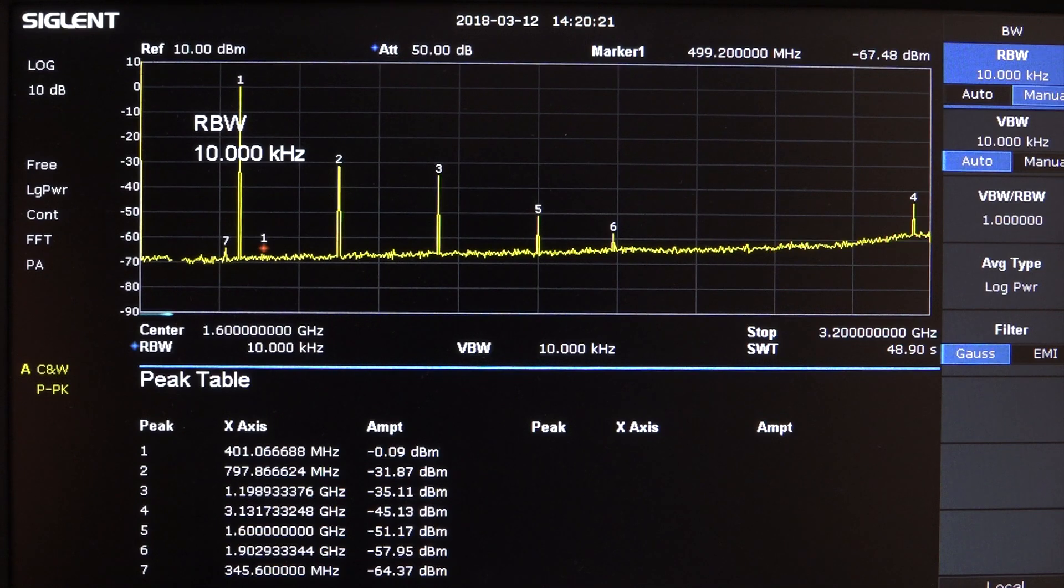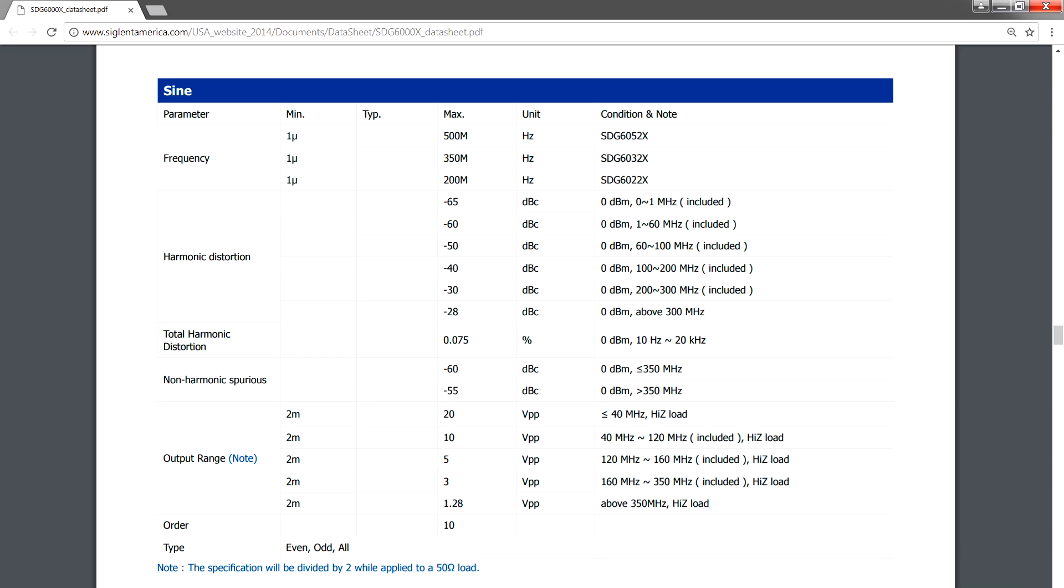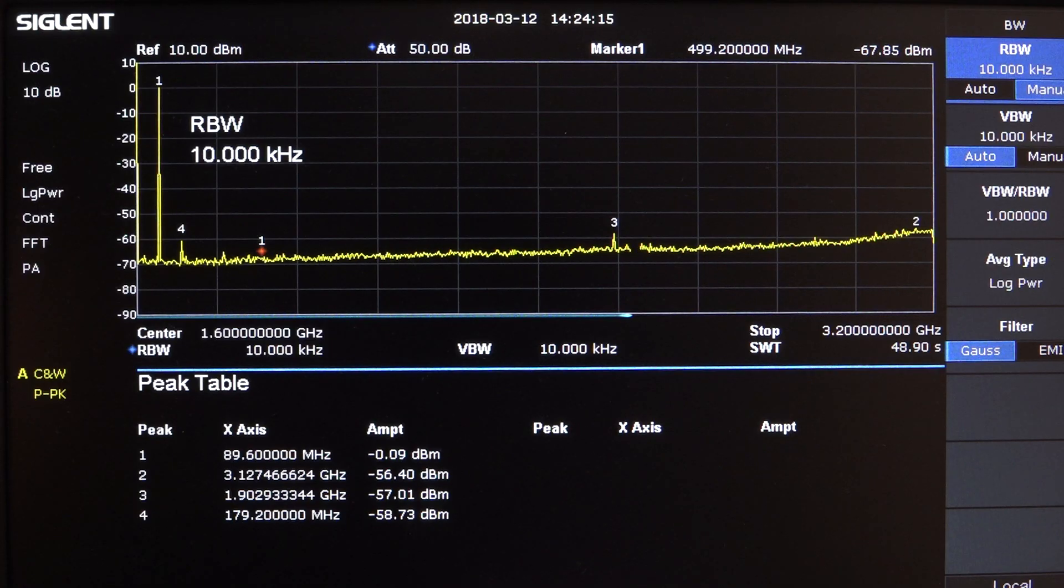I played around a little bit, searching for the worst case scenario, and at 400MHz I was able to find a harmonic at -31.8 dBc. This is several dB better than the datasheet's claim of -28 dBc. And for frequencies around 90MHz we're looking at about -58 dBc.